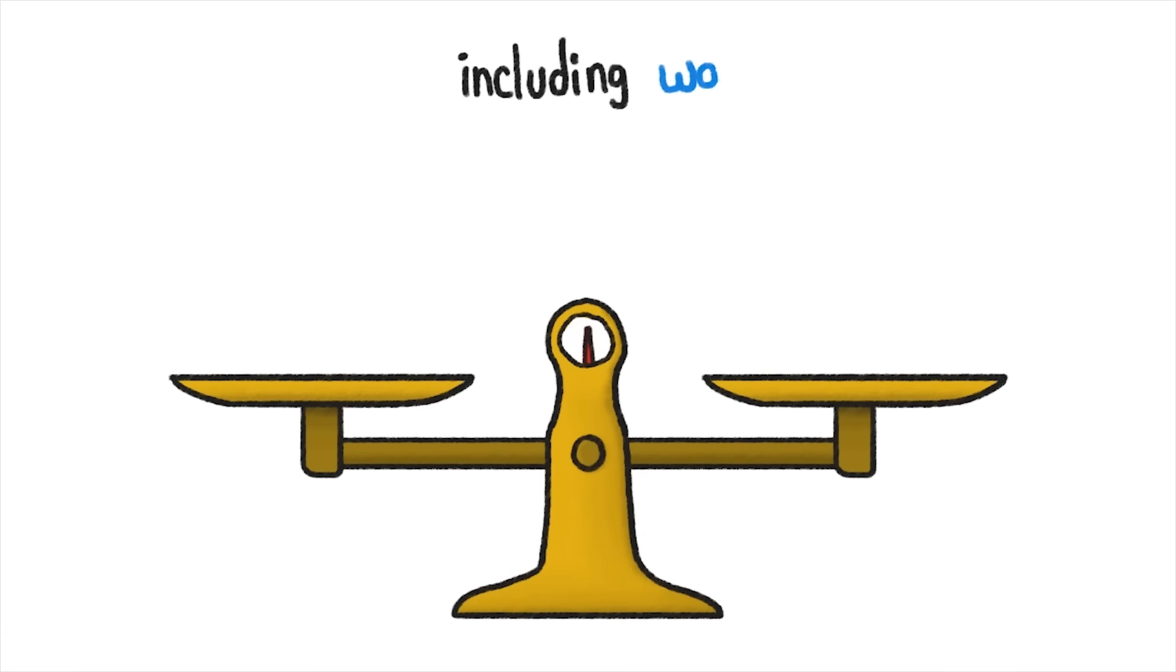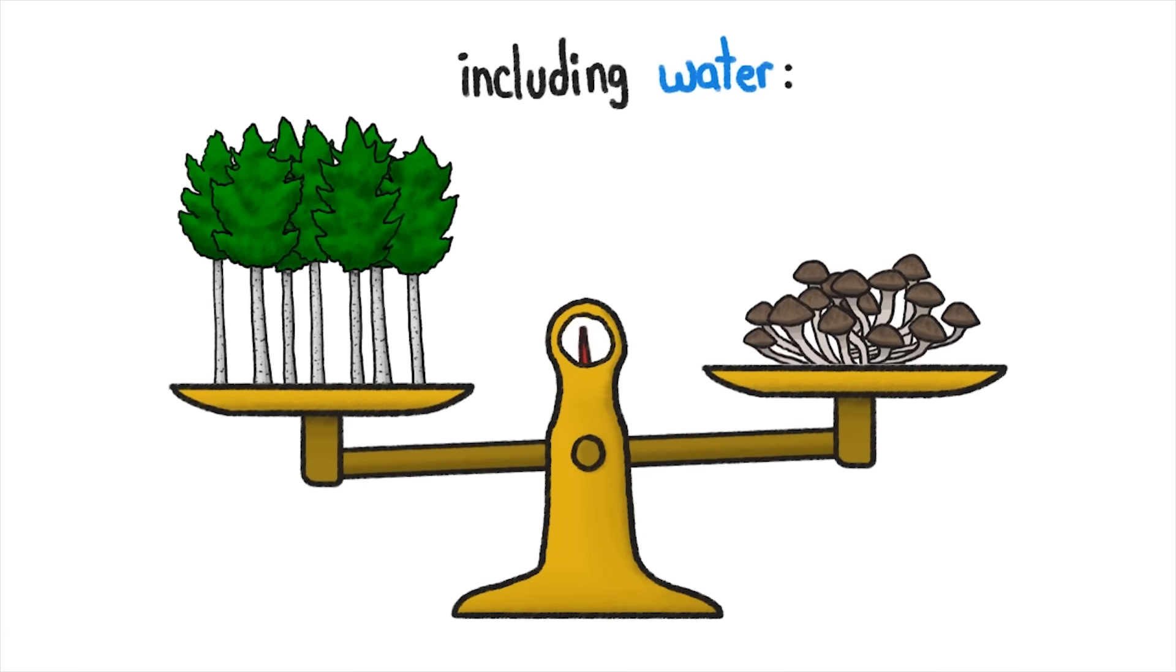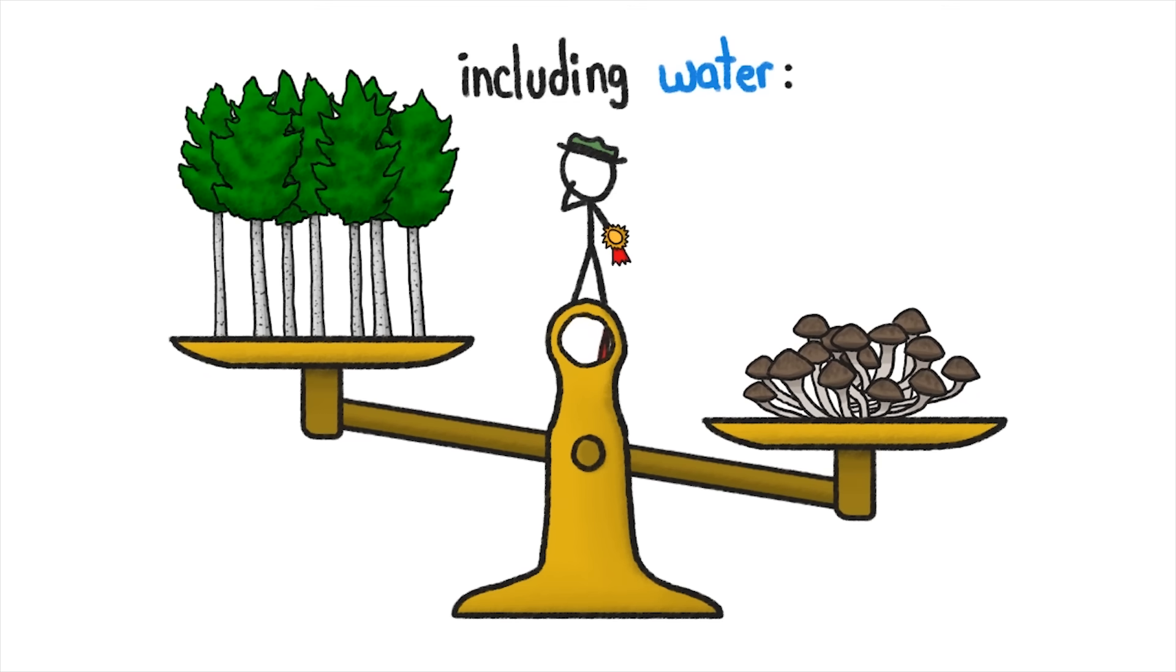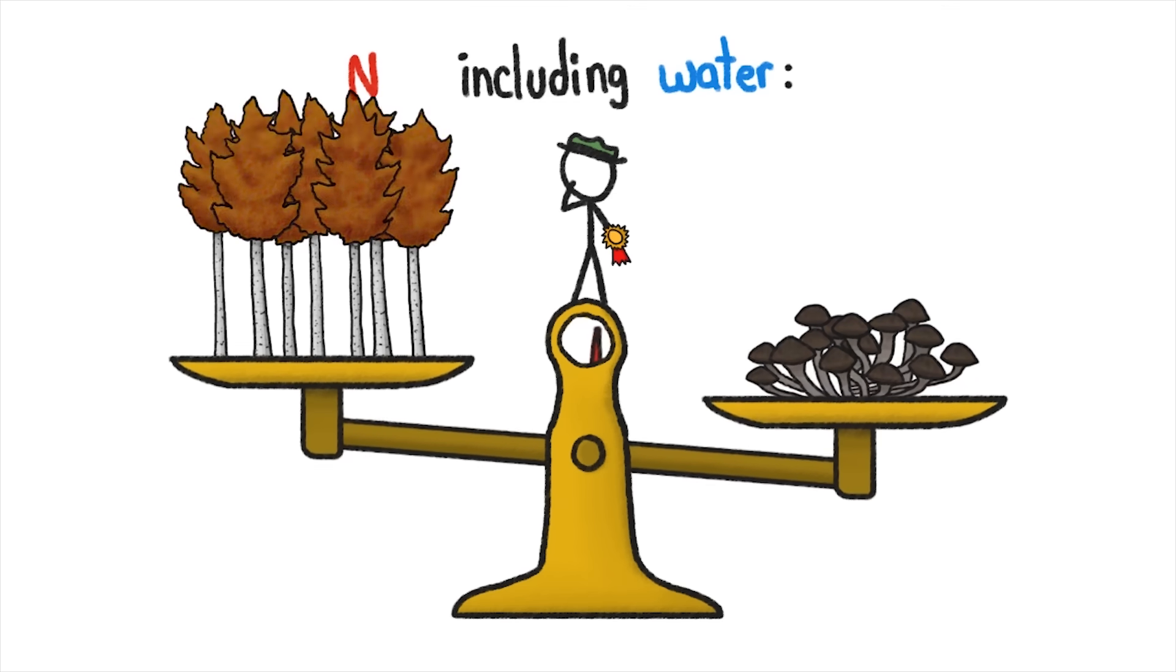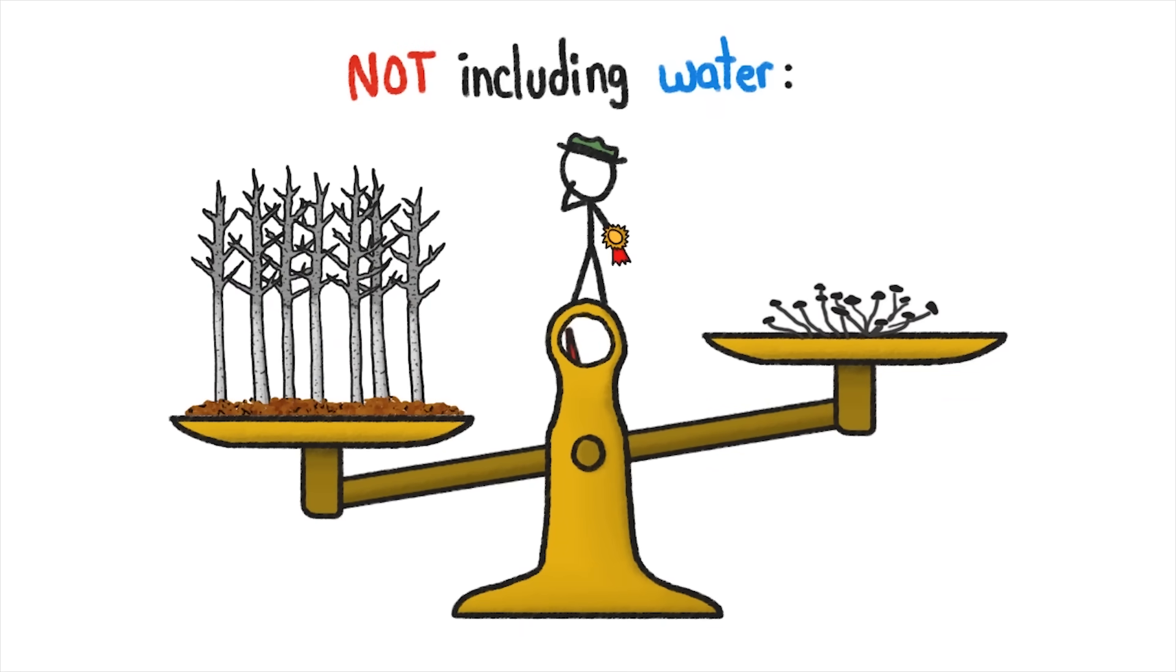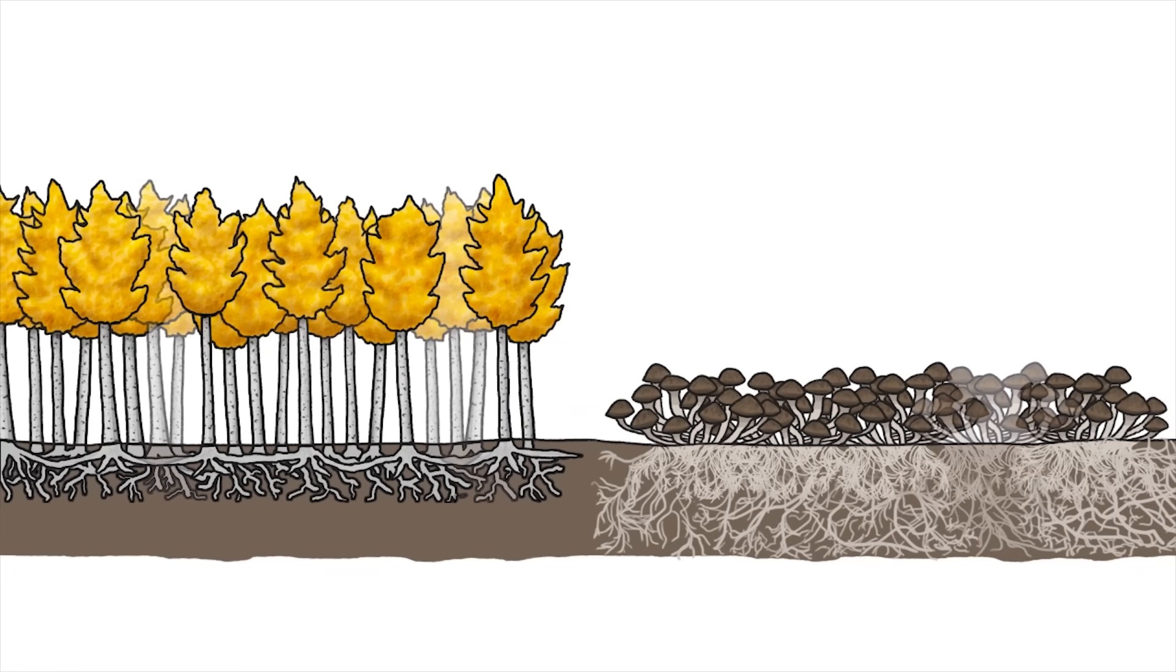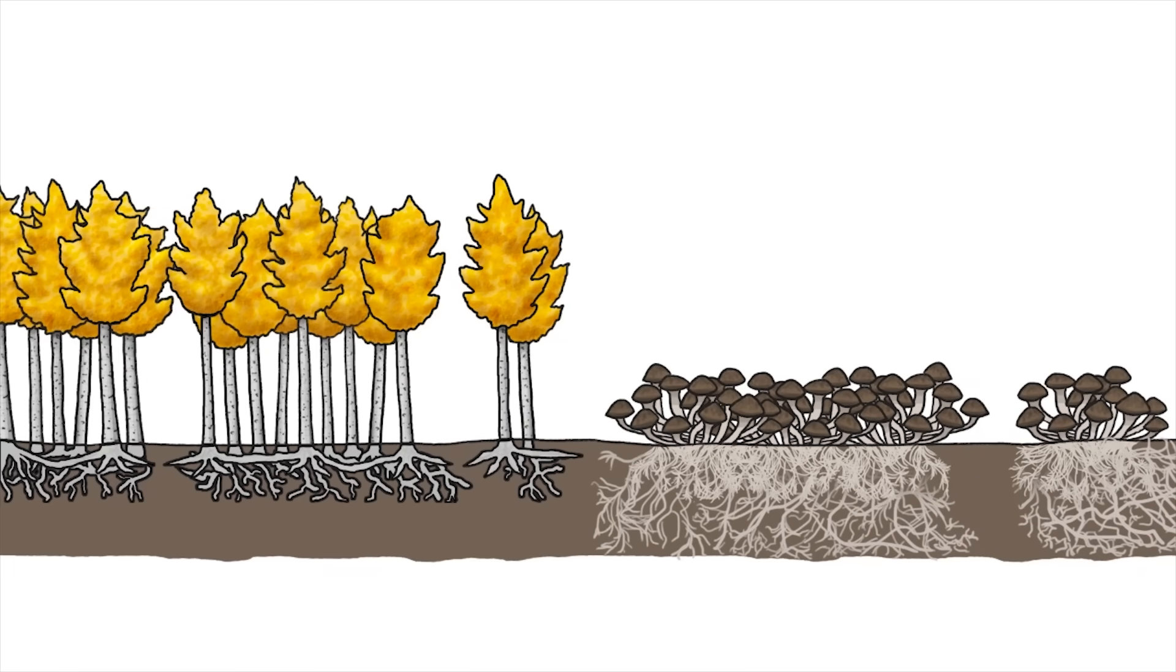Speaking of water, if you include water when weighing these giant organisms, then the humongous fungus might actually weigh more than Pando. But foresters, at least, care only about the mass actually produced during growth. The dry mass. And since fungi are mostly water, Pando wins. Either way, it's likely that some of the below-ground connections, whether roots or mycelia, have become severed over time, meaning these giants are probably comprised of smaller, but still ginormous and genetically identical patches.